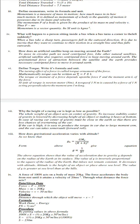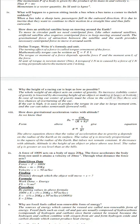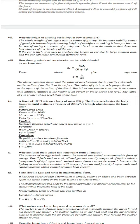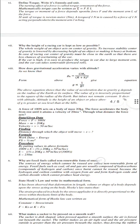Next question is why the height of a racing car is kept as low as possible? Yes, the whole height of an object acts as center of gravity. To increase stability, center of gravity is lowered by decreasing height of object, making it heavy at bottom. In case of racing car, center of gravity must be close to earth so that there are less chances of overturning of car.